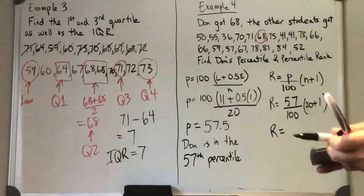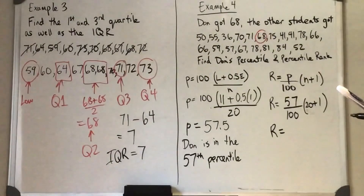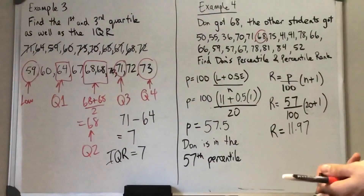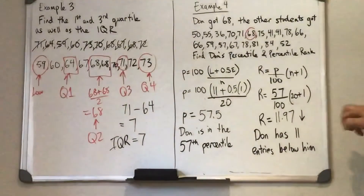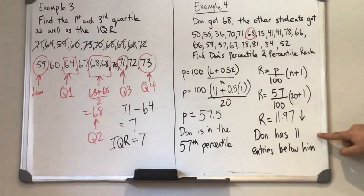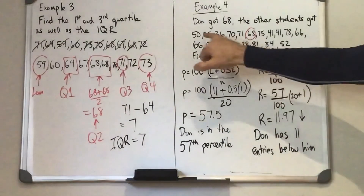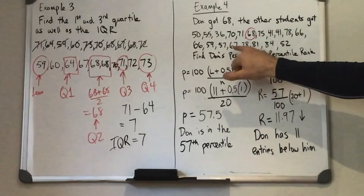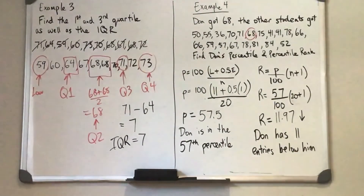Grabbing my calculator — this works out to 11.97. So like the percentile, we round down. Don has 11 entries below him in this set, so we round down to 11 as our percentile rank. From this set we can count: 1, 2, 3, 4, 5, 6, 7, 8, 9, 10, and 11 are below him — so that would be our percentile rank.